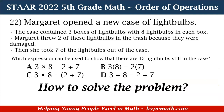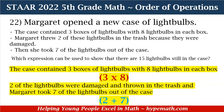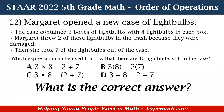Let's solve step by step. First, the case had three boxes with eight light bulbs each, so we multiply to find the total: three times eight. Then, two light bulbs were damaged and Margaret took seven out of the case. Since both groups were removed, we need to subtract them from the total amount of light bulbs.